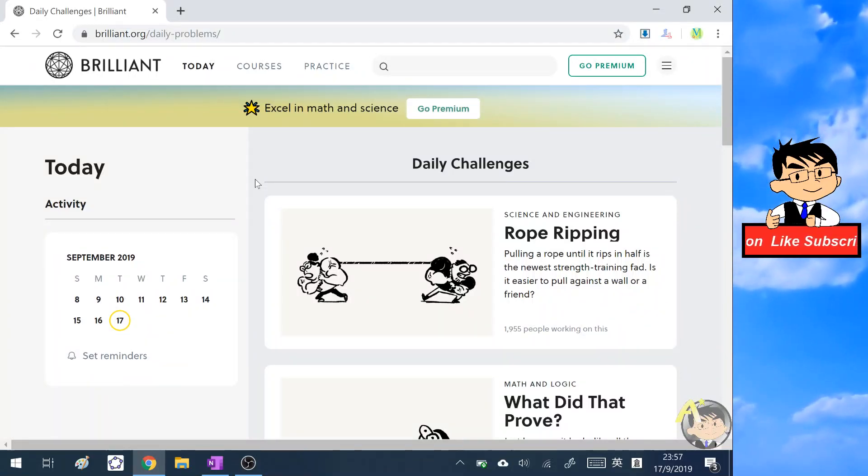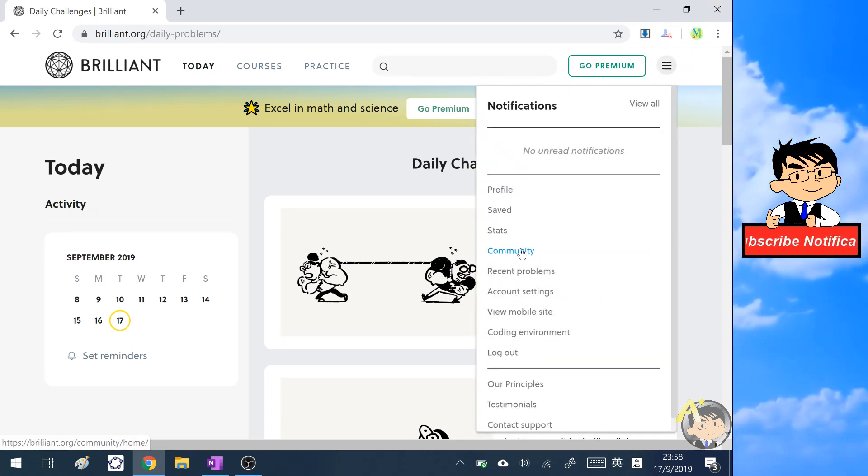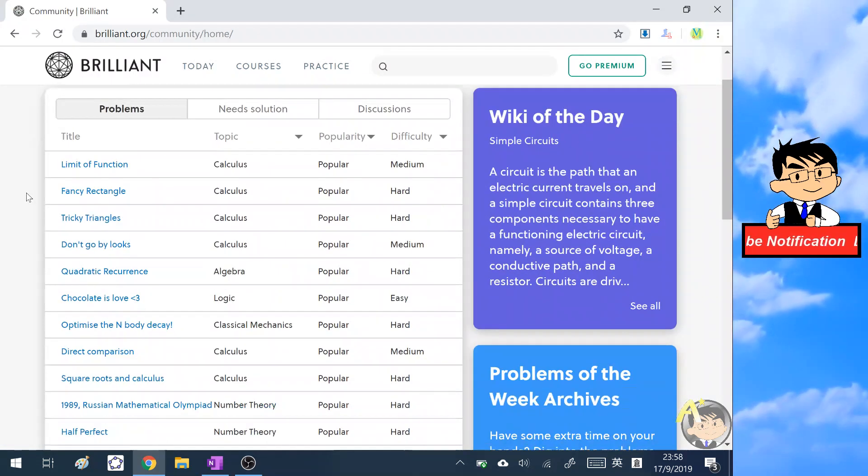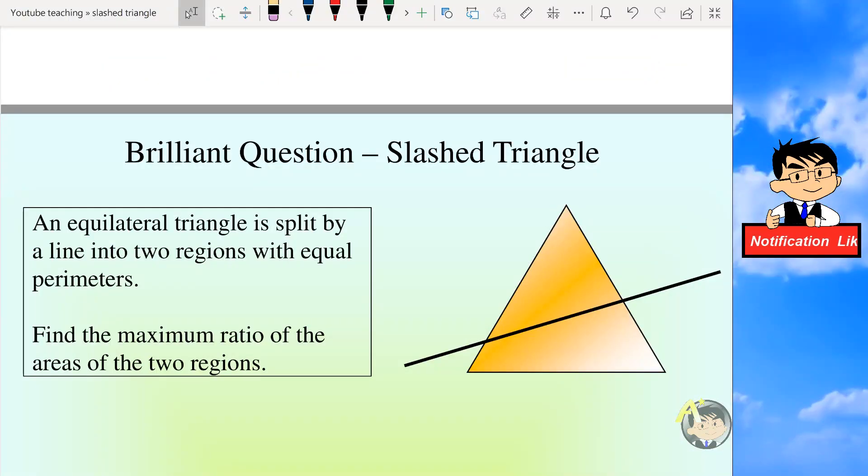Hello everyone, today I'm going to share a question from the Brilliant website. I found this question in the community tab, so I click into the community and then there are many very interesting problems. Let's go to my problem, the problem I chose is this slashed triangle.